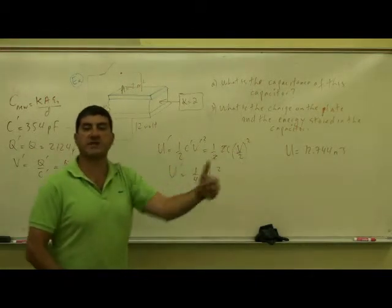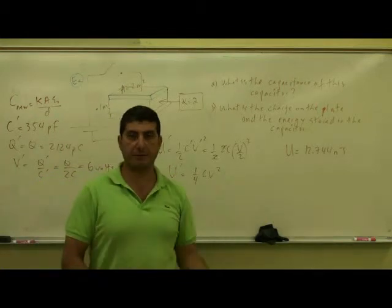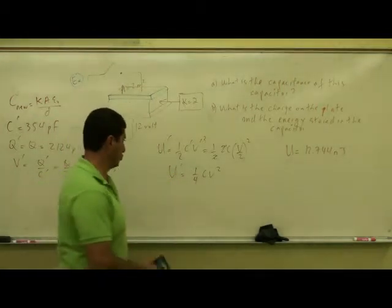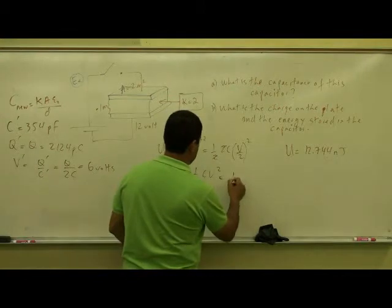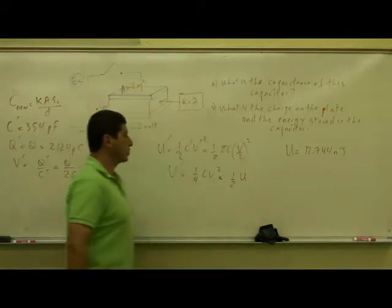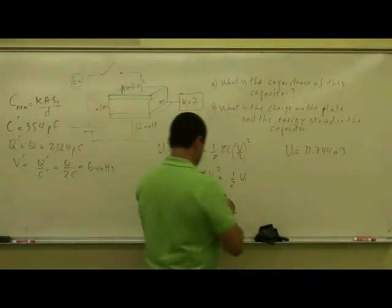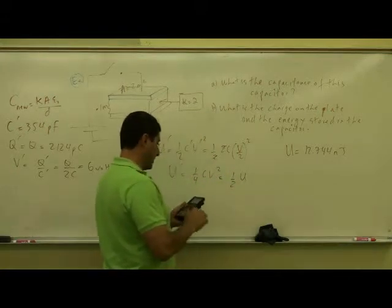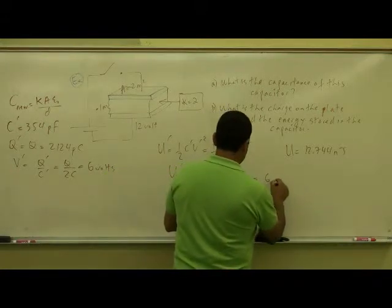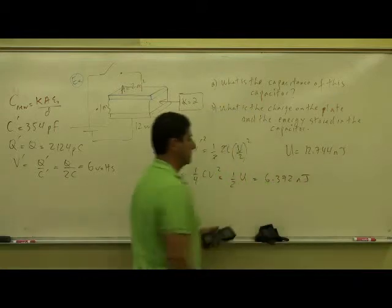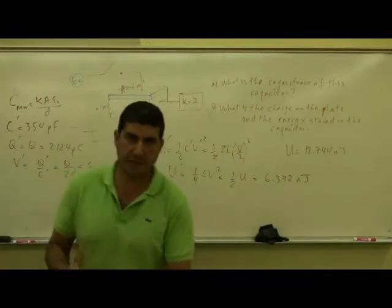So overall effect is that the potential energy dropped by a factor of two. So it's equal to one-half of the original potential energy, which if I divide this by two, I get 6.372 nanojoules. So what does this mean?